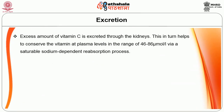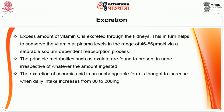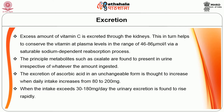Excess amounts of vitamin C are excreted through the kidneys. This helps to conserve the vitamin at plasma levels in the range of 46-86 micromoles per litre via a saturable sodium-dependent reabsorption process. The principal metabolites such as oxalate are found to be present in urine irrespective of the amount ingested. The excretion of ascorbic acid in an unchanged form is thought to increase when daily intake increases from 80-200 mg. When the intake exceeds 30-180 mg per day, urinary excretion is found to rise rapidly.